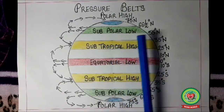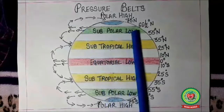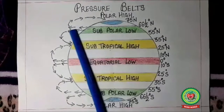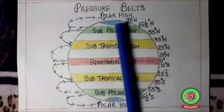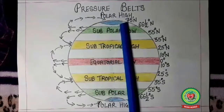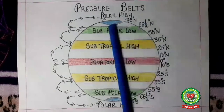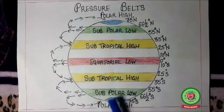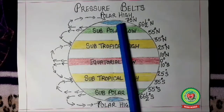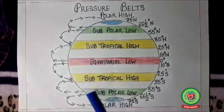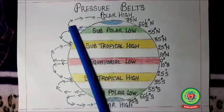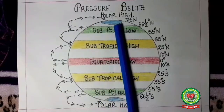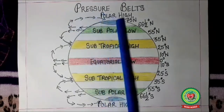The subpolar low pressure belt is created dynamically — temperature has no role here. It is created due to centrifugal force at 60° North and 60° South latitude, where air is thrown out due to rotation of the earth. The polar high pressure belt is created due to very low temperature from very slanting rays of the sun. The land is covered by ice and snow in both hemispheres, and the air is very cool and heavy. Moreover, air thrown out from the subpolar belt rises, cools down, and sinks in the polar belt, also contributing to polar high pressure.